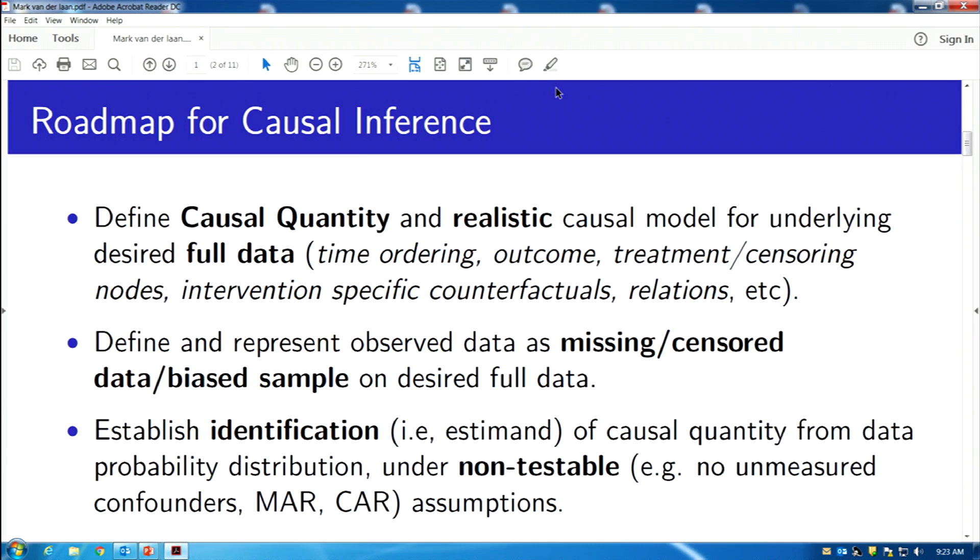The first step is really understanding what is the question of interest. So this is where you sit down with all the scientists and really nail it. And for that, we have a formal language, which are causal models, such as the structural equation models by Judea Pearl, for example, or the Neyman-Rubin model. And so here you define your real question of interest from a causal perspective. So this involves specifying what is your outcome, what are your intervention nodes, maybe censoring, missingness, all these things can be going on.